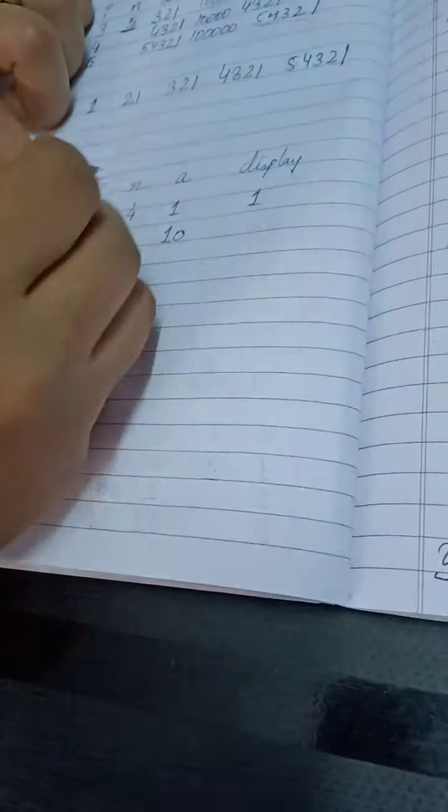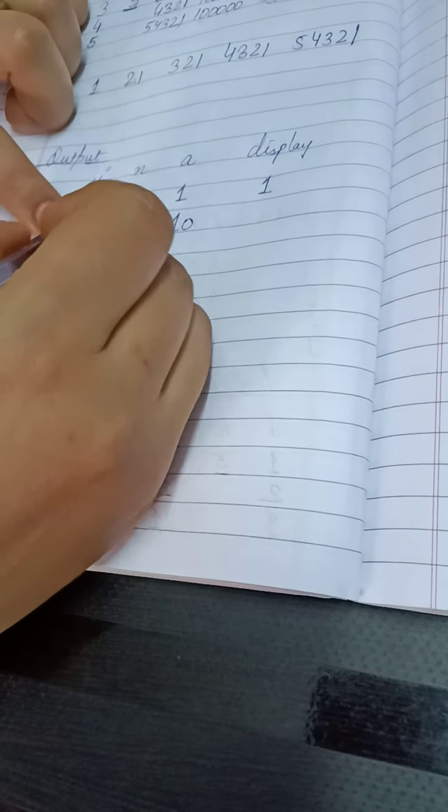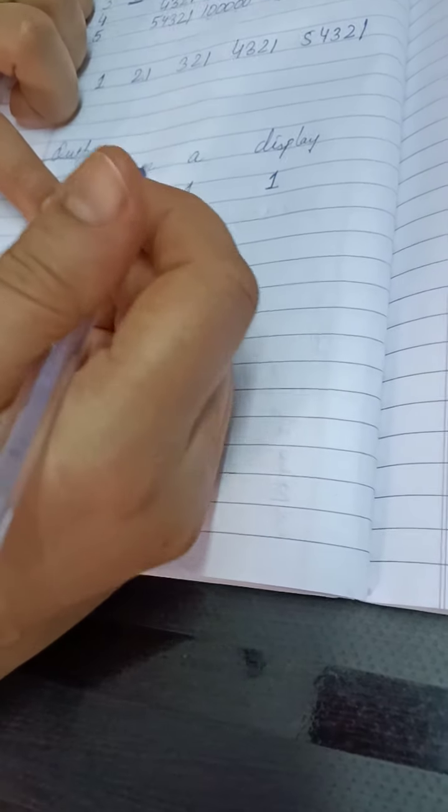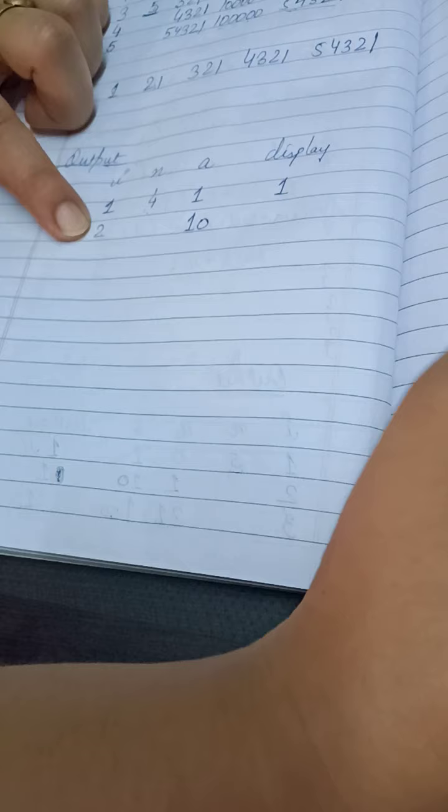Now i is 2 and 2 is obviously less than 4. Now it will display here 10.